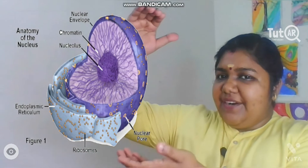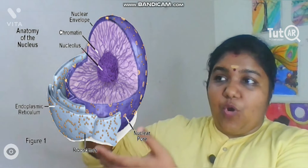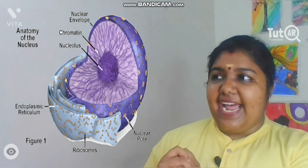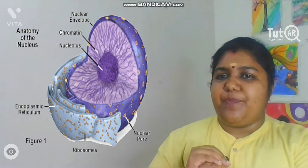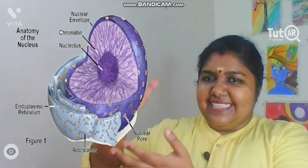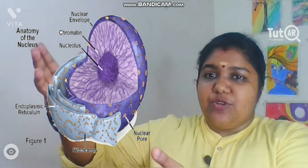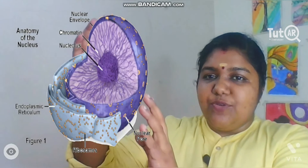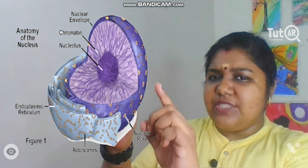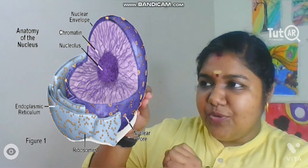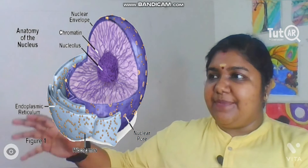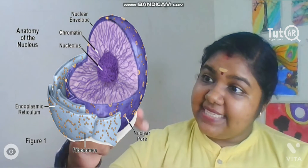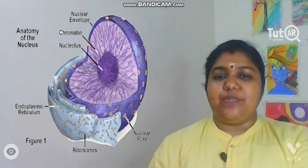The nucleus is a spherical organelle visible under a compound microscope, especially when stained. This is a model cut open so we can see its interior. It is covered with a nuclear envelope having numerous nuclear pores. It has a central nucleolus and a number of chromatin fibers spread throughout the nucleoplasm. There is also a rough endoplasmic reticulum associated with it, with ribosomes visible on its surface.